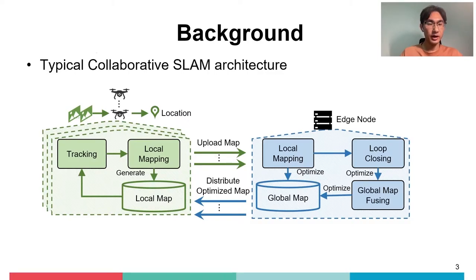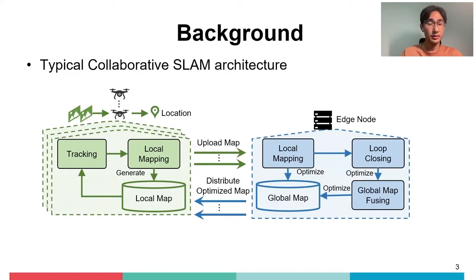Let me briefly introduce the architecture of a typical collaborative SLAM system. Most systems are equipped with a centralized edge node which performs computation-intensive tasks, enabling agents to run lightweight SLAM on the end device. Each agent localizes itself and builds a surrounding local map in real-time. To improve map accuracy, each agent periodically sends its local map to the edge server, which optimizes and fuses maps from various agents. The server maintains a global map containing each agent's map and sends it back to improve localization accuracy.